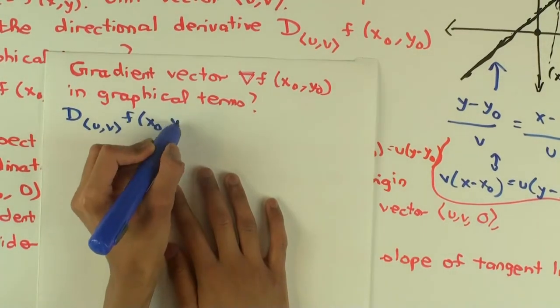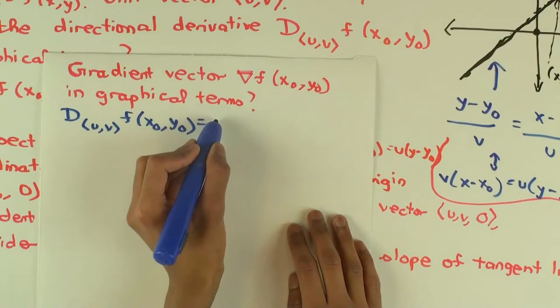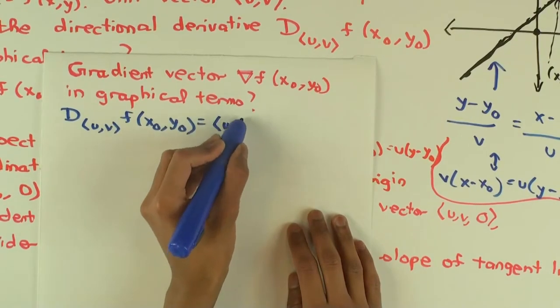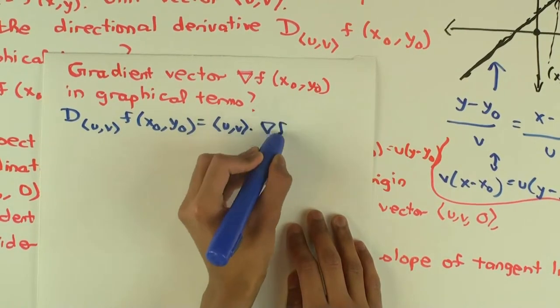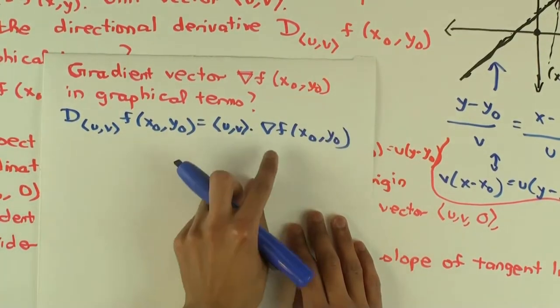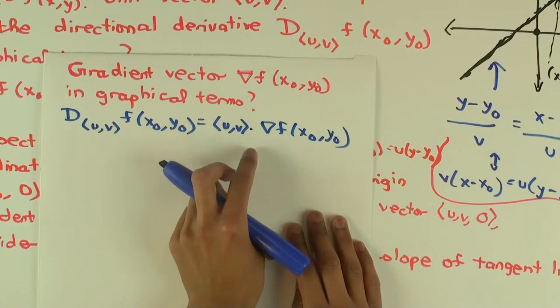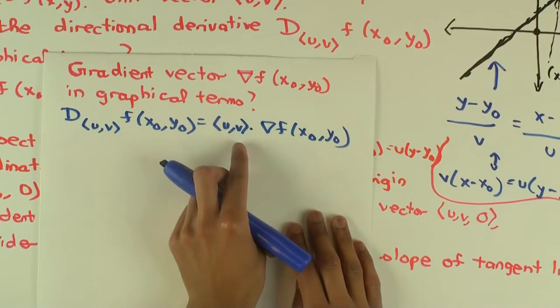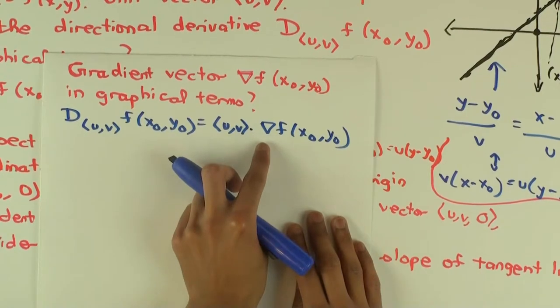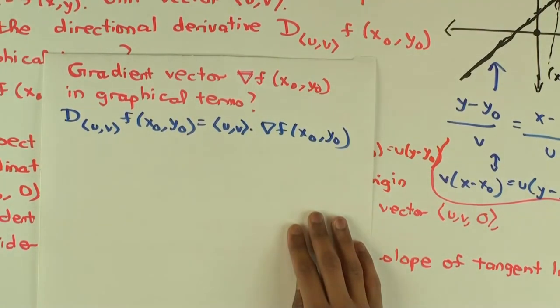What's the directional derivative? Dot product of the vector u with the gradient vector. What I'm saying is that the directional derivative in a direction is determined by essentially how close that direction is to the gradient vector direction and by the magnitude of the gradient vector.